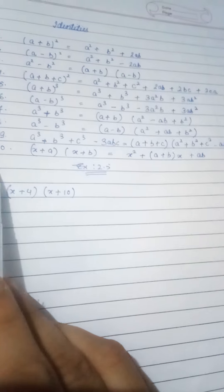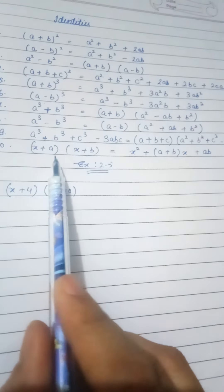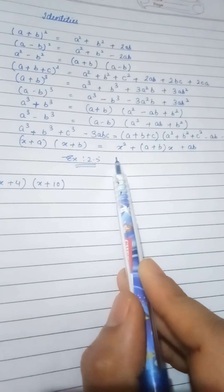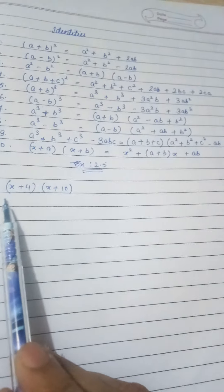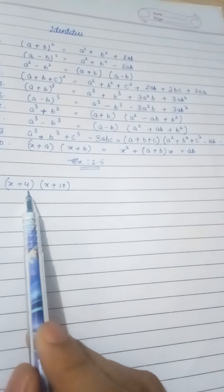I forgot one identity and need to mention it. x plus a times x plus b is equal to x squared plus a plus b times x plus a times b. We will use this when the first term is the same and the second term is different.